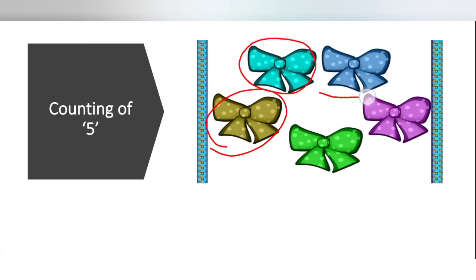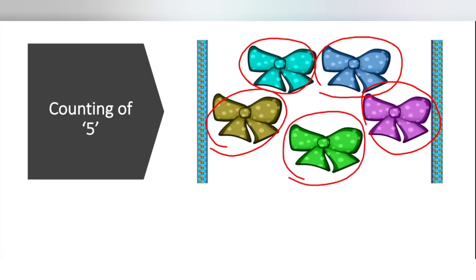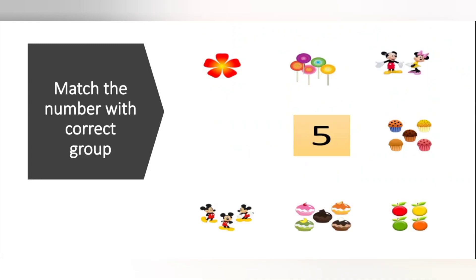Now we will match the number 5. So what is the number here? 5. We will count each group and match the number 5. The first one — it's only 1 flower. In the second one, lollipops: 1, 2, 3, 4, 5. How many are there? 5 lollipops. So we will match it with number 5.